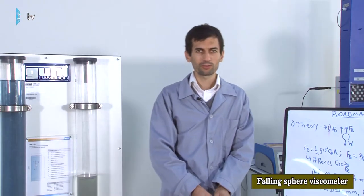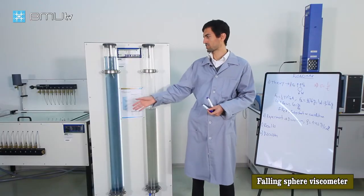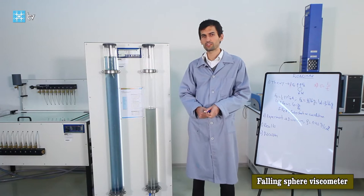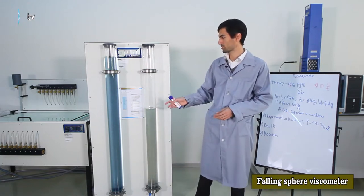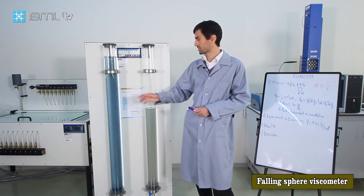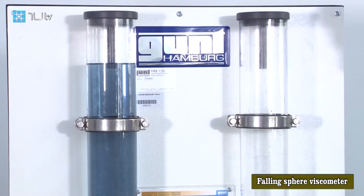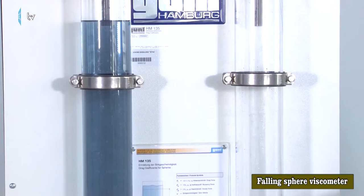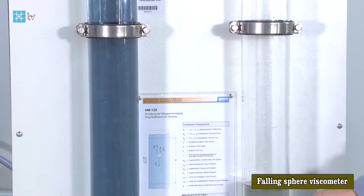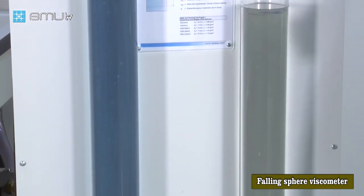Hello dear students. We have now moved on to the next device, which is used to measure the viscosity of fluids. We have two cylinders here — this is also called a falling sphere viscometer. One cylinder is filled with water, with ink added so it's colorful and visible, and the other is filled with glycerin. We have two different fluids with two different viscosities.